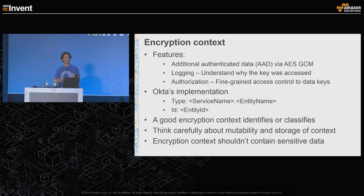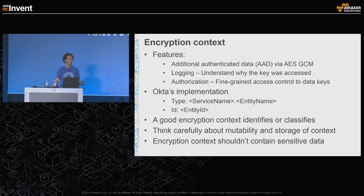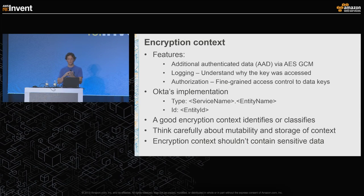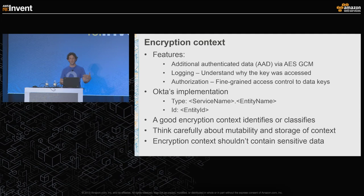What you're really thinking about is: how will I answer the question of what data is being encrypted or decrypted when I look at my logs? You're also trying to answer: how will I create a security policy to manage access to my keys? The way we thought about it at Okta is that encryption context should do two things — it should identify your data (tell you what's being encrypted or decrypted) and it should classify your data. In our concrete example we ended up with service name and entity name as the classification, and an opaque identifier to find out what record is actually being operated on.